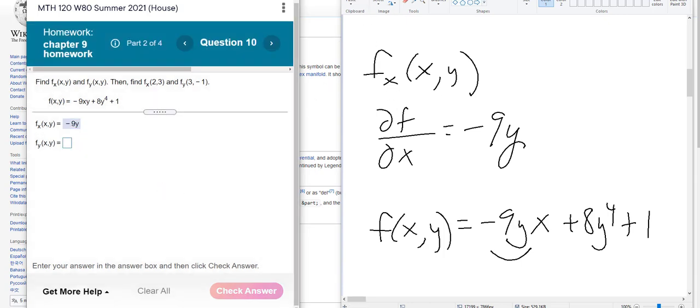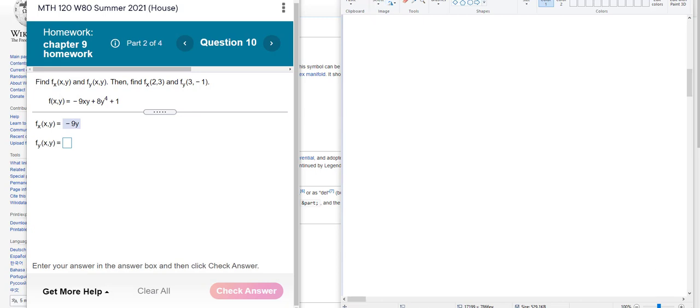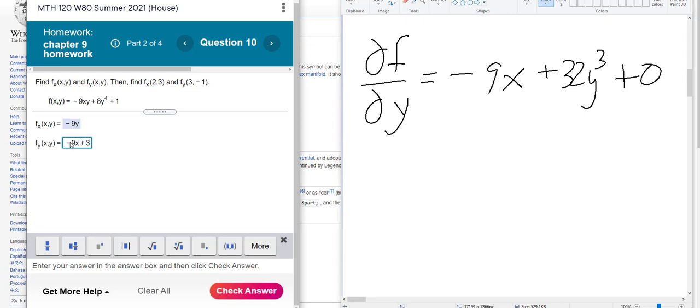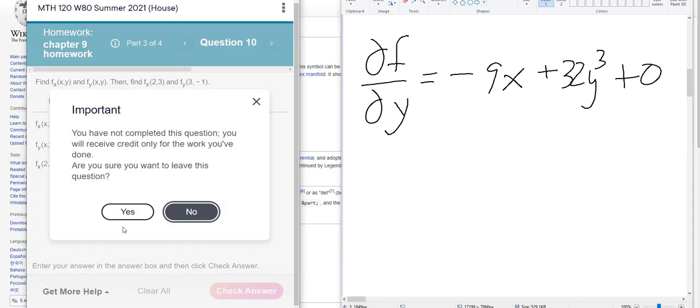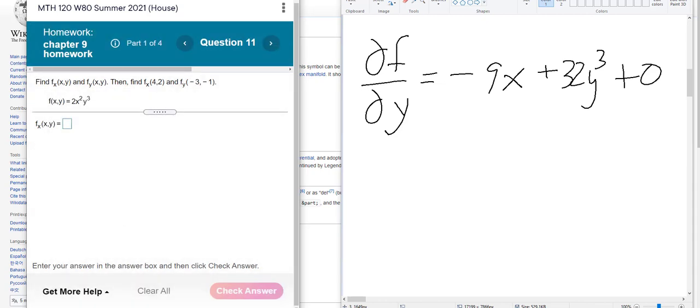All right. Let's do another one. Let's do the derivative of f with respect to y. So that means that f sub y, x, y means the derivative of f, this time with respect to y. And the y's are already in the back, so it's negative 9x plus 32y to the third plus zero. So that's going to be negative 9x plus 32y to the third. And then this means put 2 in for x and 3 into y for the derivative with respect to x. So you can do that.